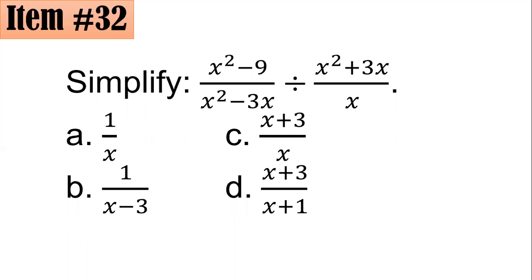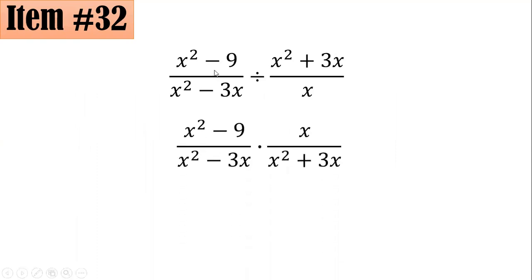Item 32. Simplify this one: x squared minus 9 all over x squared minus 3x divided by x squared plus 3x all over x. Is it A, B, C, or D? What do you think? So remember, if we are dividing rational expressions, we are actually multiplying the dividend with the reciprocal of our divisor. Hence, I copied this one first, and I multiplied it with the reciprocal that could be achieved by interchanging the numerator and denominator of our divisor.